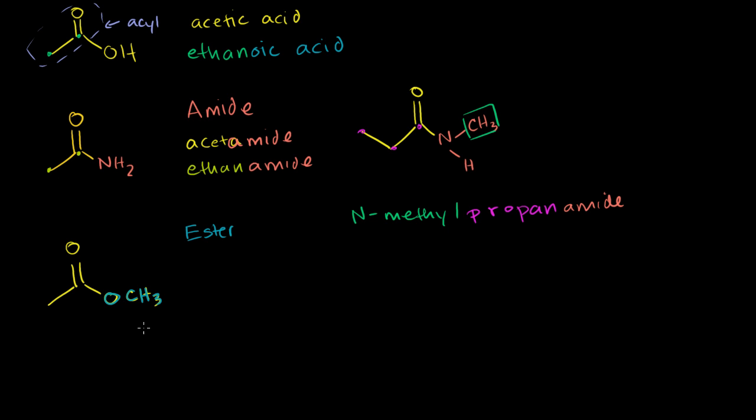So right over here, for the ester, if we were to give it its common name, and we've seen this ester before, it is acetate. And if we wanted to give it its systematic name, you look at the longest chain, one, two carbons. So it is ethan. And you don't call it ethanoic acid anymore. You call it ethanoate, ethanoate, just like that.